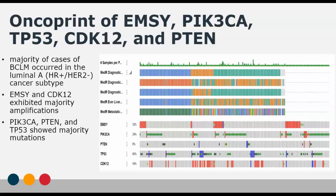Below are all the genes included in my query, along with their percentage of alteration frequency. Red is for amplifications, while green represents missense mutations. Black represents truncating mutations such as nonsense mutations and splices, and blue is for deep deletions. Based on this, a lot of the cases of breast cancer metastasis occurred in the luminal A cancer subtype, which is hormone receptor positive and HER2 receptor negative. Also, MZ and CDK12 exhibited a majority of amplifications, while PIK3CA, P10, and TP53 showed majority mutations.